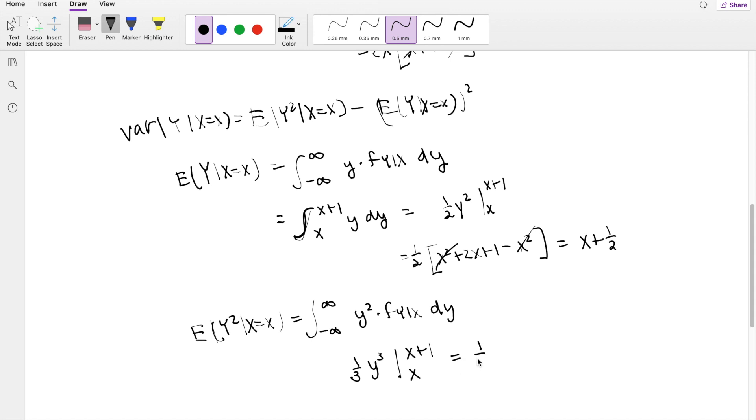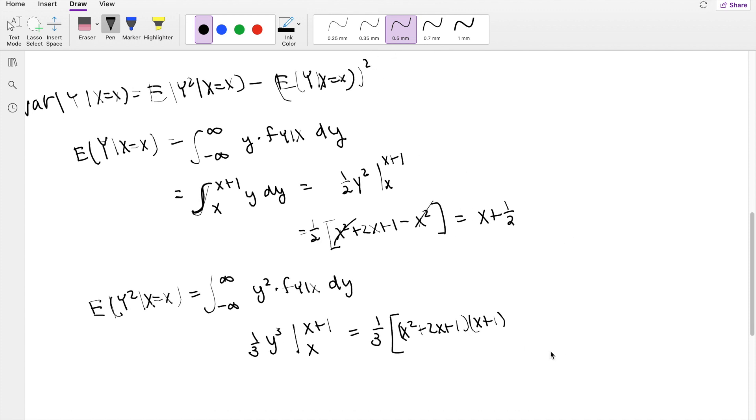So then when I plug in the upper limit here, this is actually (X² plus 2X plus 1), right, it's to the third power, times (X plus 1). I don't have my cube formula memorized, I'm not that cool, you know, I try to be cool, but I'm not that cool.